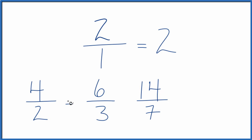All of these are equal. They're equivalent fractions to 2 over 1, or 2. Divide 4 by 2, 6 by 3, 14 by 7, or 2 by 1—you get 2.